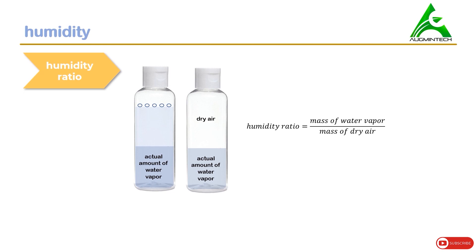To define humidity ratio, we take the ratio of the mass of water vapor to the mass of dry air. An important point to note is that humidity ratio has nothing to do with the maximum amount of water vapor the air can hold. We can write humidity ratio as W = MV / MA. Humidity ratio is denoted as capital W. There is another more complex formula shown just for reference.